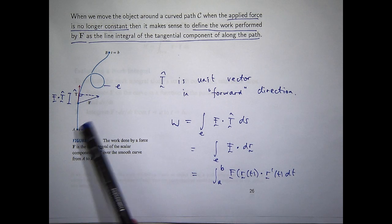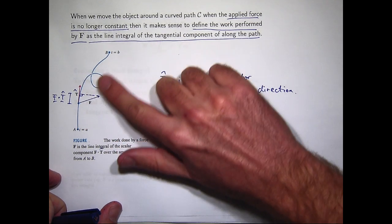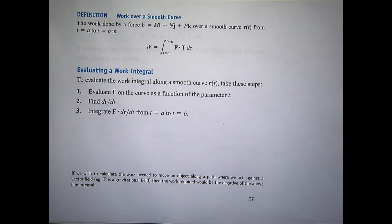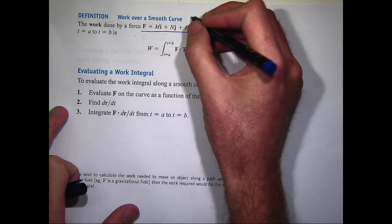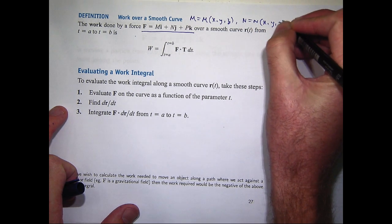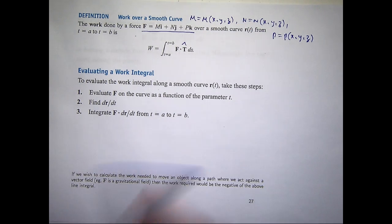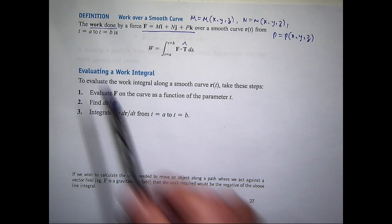Here the R of T is a vector function that parameterizes this curve in the forward direction. The value at A and the value at B give you the end points, and as T varies between A and B, basically this curve gets traced out. Suppose I have a vector field F and it has component functions that depend on X, Y, and Z.